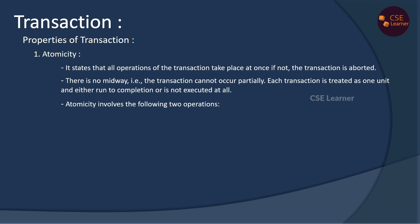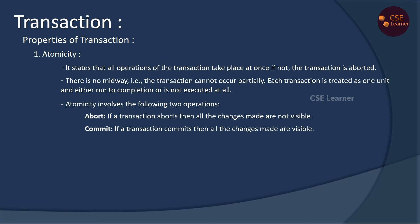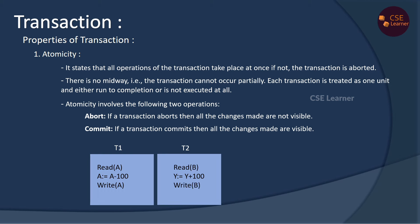For Atomicity, there are 2 operations: Abort and Commit. Abort means the transaction is stopped — the transaction is not done, and no changes are stored in the database. Commit means the transaction is done successfully and all changes are stored in the database. For example, account A and account B — we will transfer $100 from A to B. T1 transaction deducts from A, T2 transaction adds to B. If T1 is complete but T2 fails, B is not updated and the database becomes inconsistent. That is why Atomicity ensures either both operations complete or neither does.